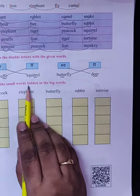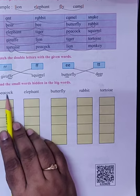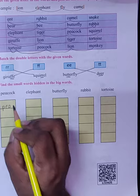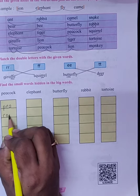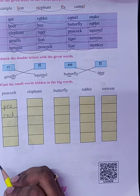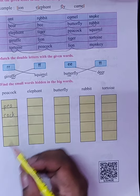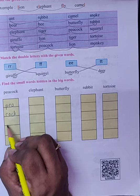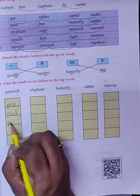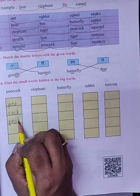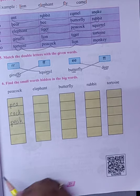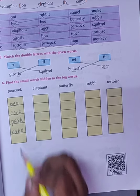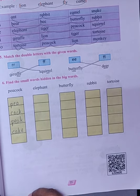Find the small words hidden in the big words. Peacock, so Peacock we will write over here. Peacock. And then it will come over here as pea, then cake.